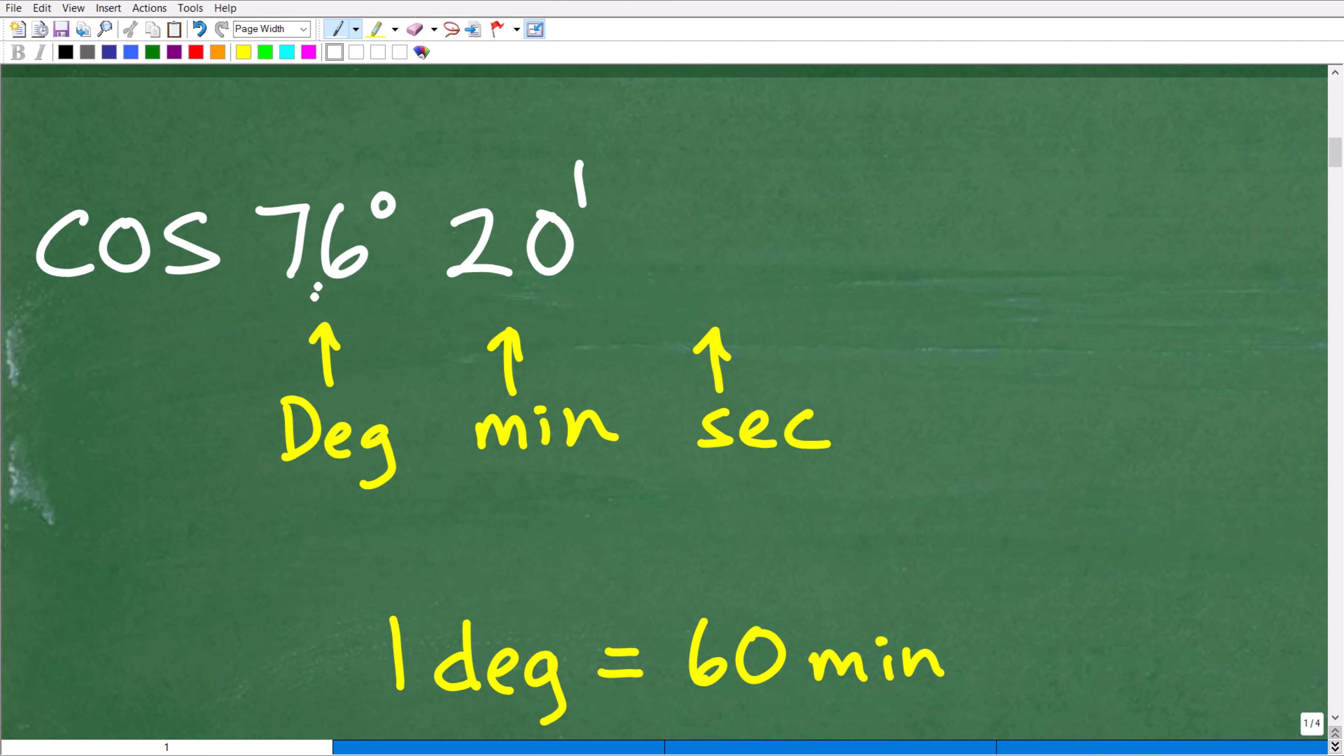So we have a cosine of 76 degrees, 20 minutes. Now here we don't have seconds, but if I put in something like 45 and I put two little apostrophes up there, that would mean seconds. But what does that mean?